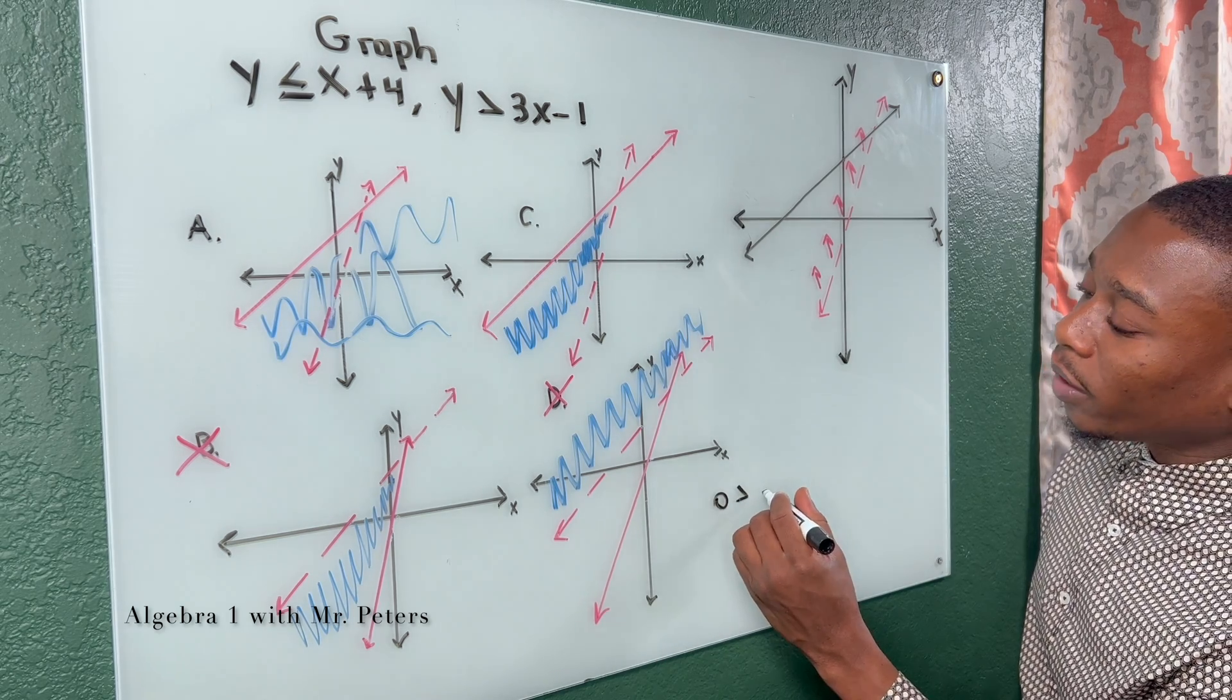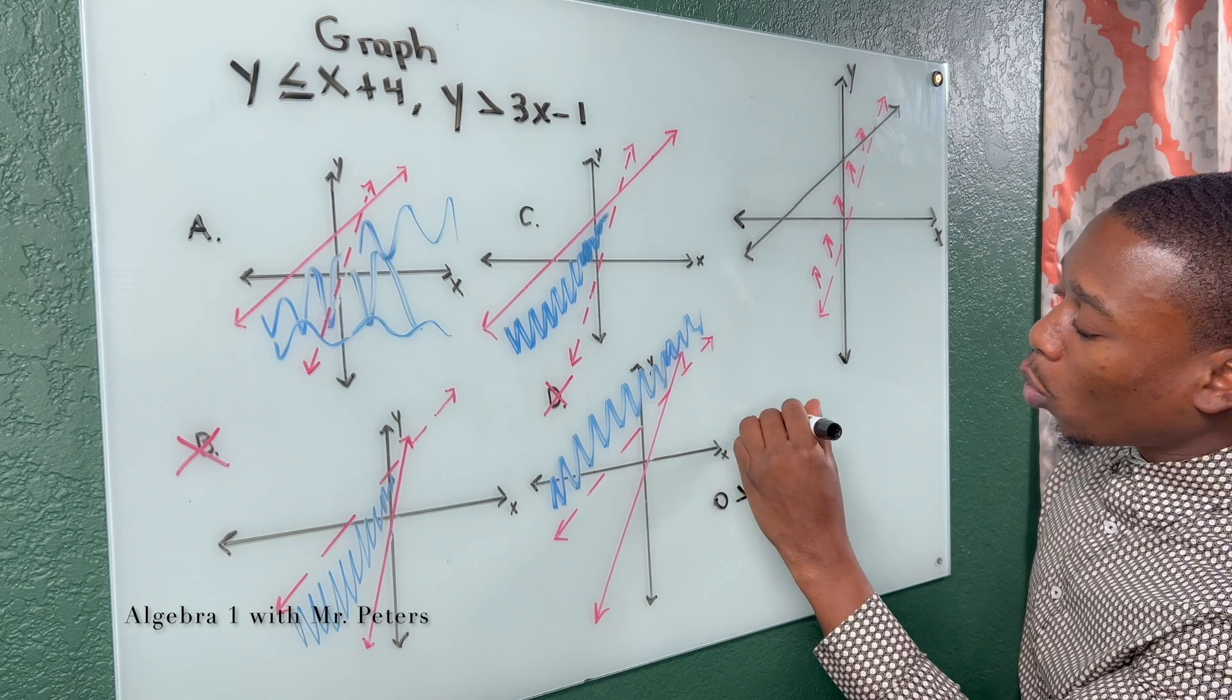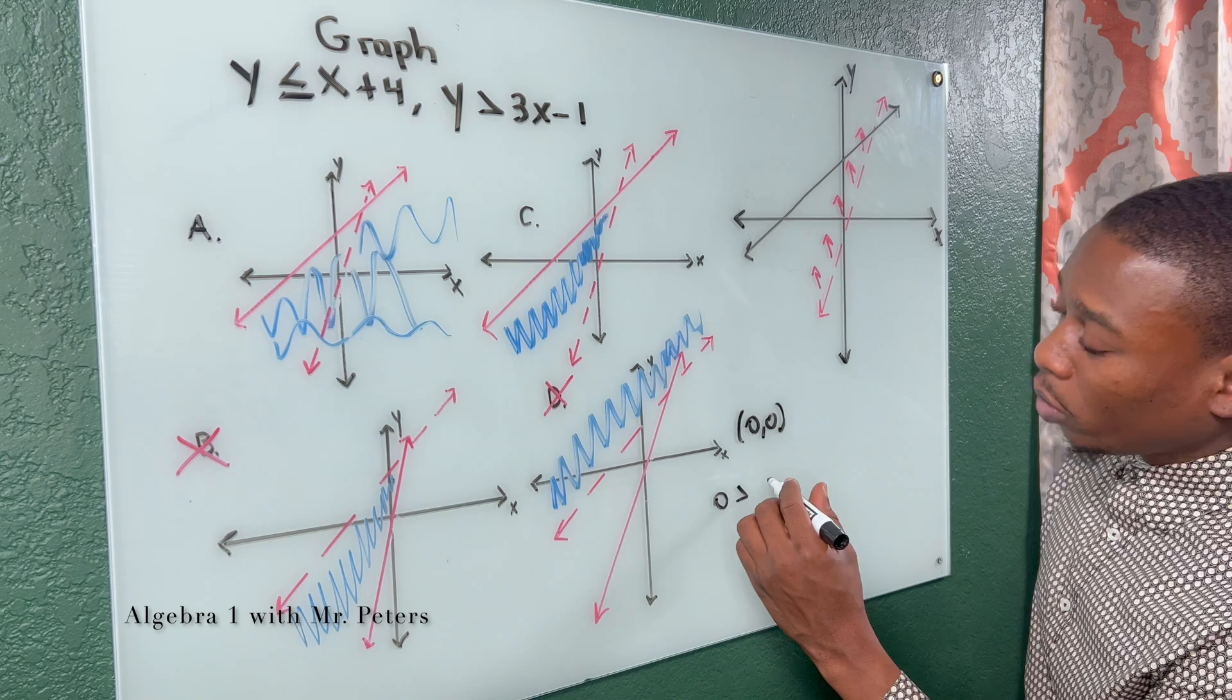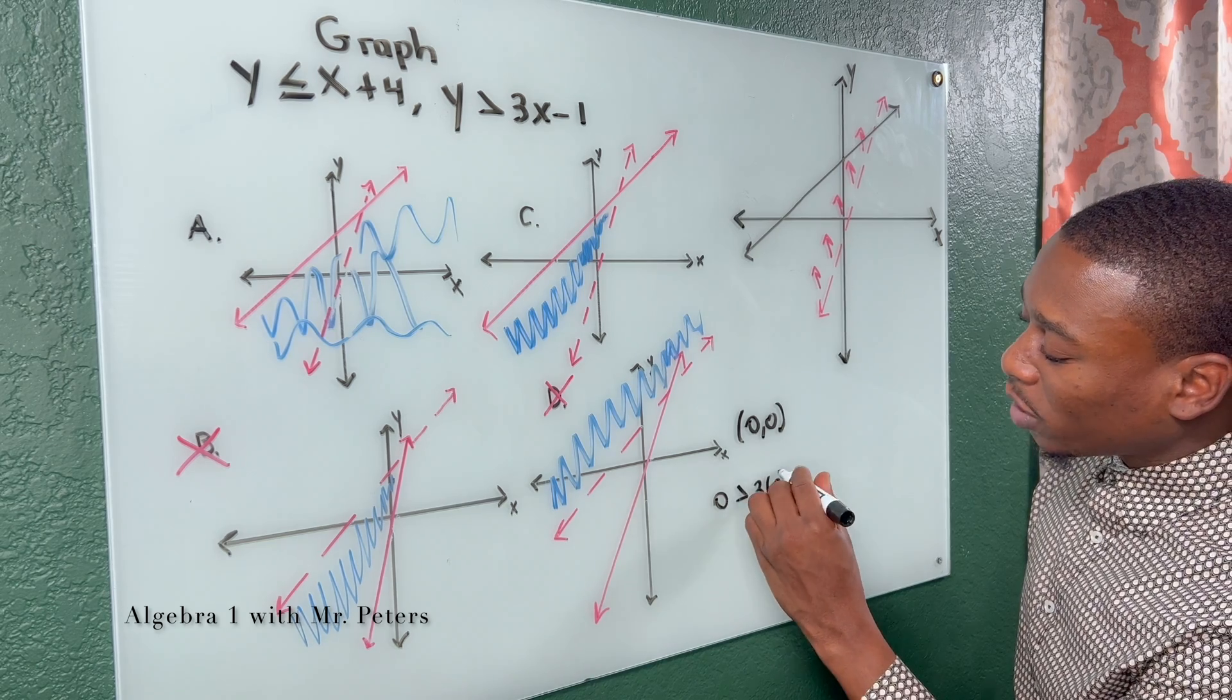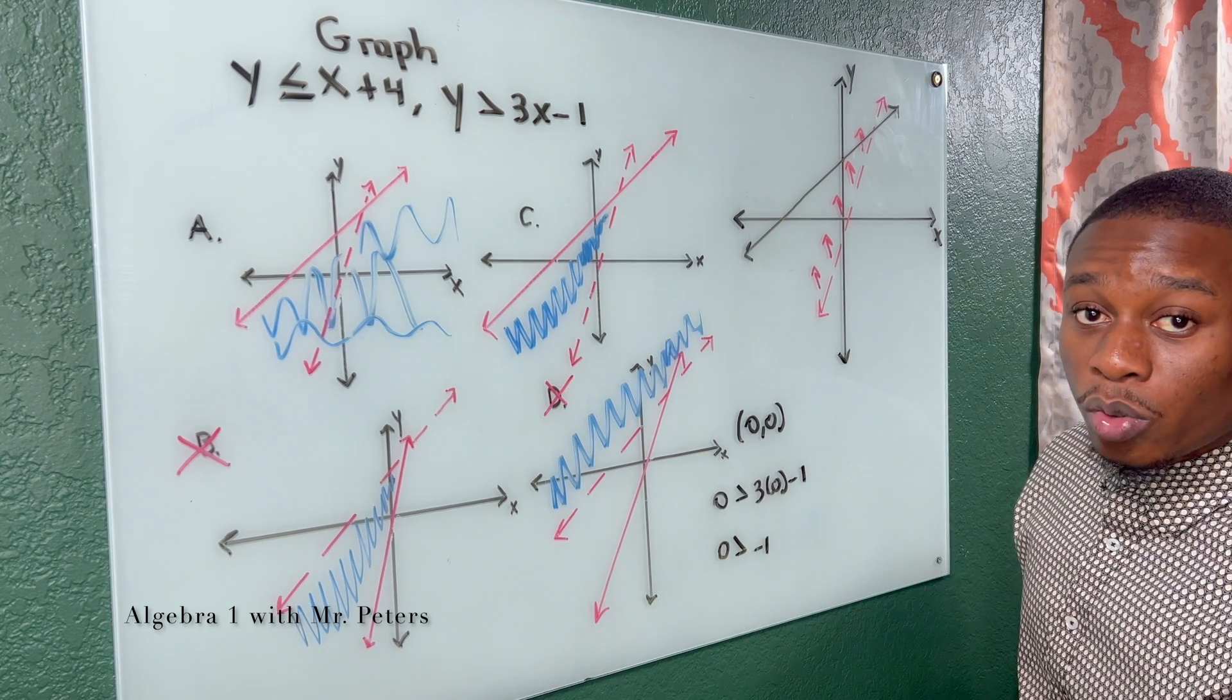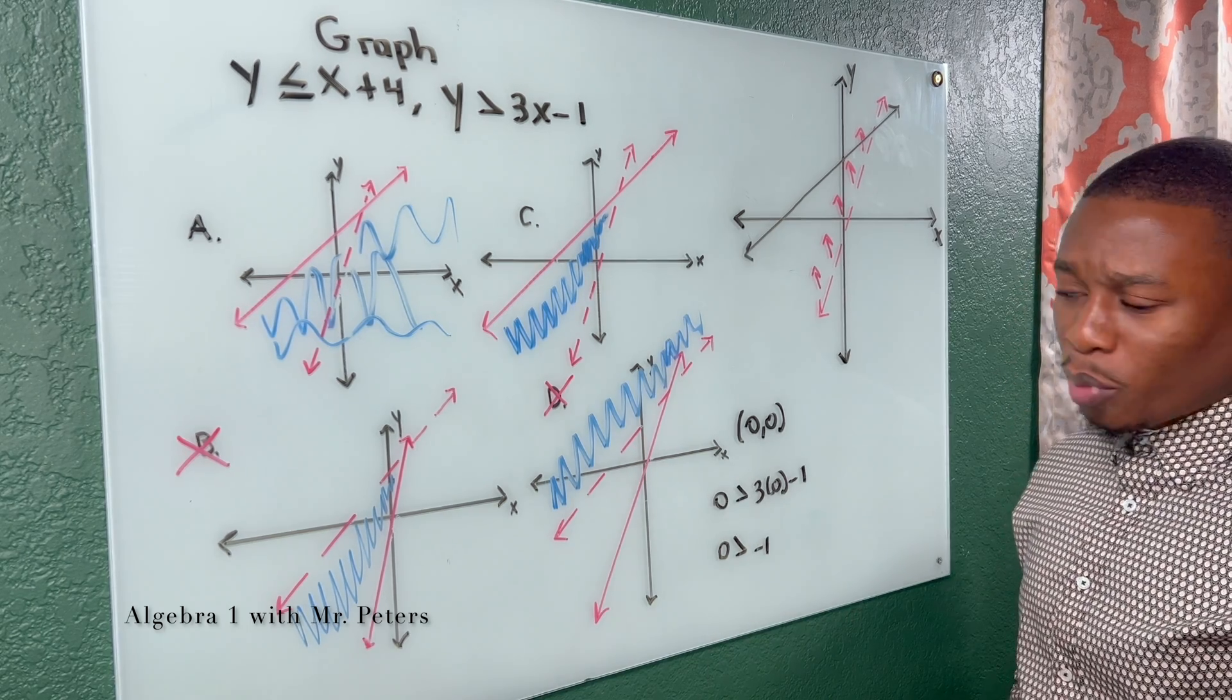So 0 is greater than, and when I say 0, I mean the ordered pair of 0, 0. We picked it, right? So 0 now is greater than 3 times 0 minus 1. So if 0 is greater than negative 1, this is true, meaning we're going to shade to where that point is.